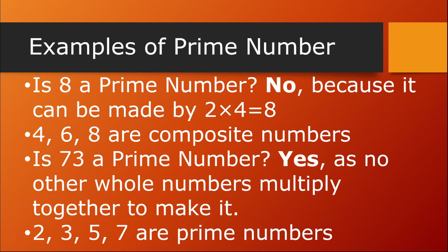Examples of prime numbers are 2, 3, 5, and 7. Two is the only even number among prime numbers because prime numbers are numbers that cannot be divided evenly. So 8 is not a prime number because it can be made by 2 times 4 or 1 times 8. Four, 6, and 8 are composite numbers. 73 is a prime number, as no other whole numbers multiply together to make 73.